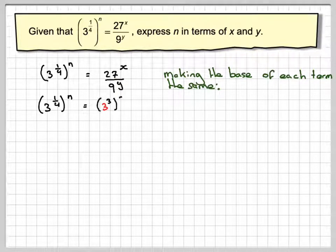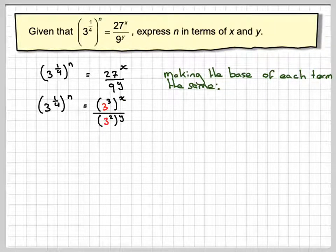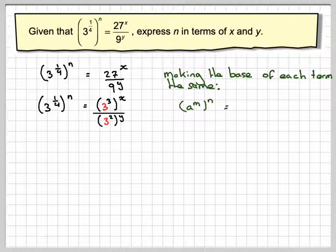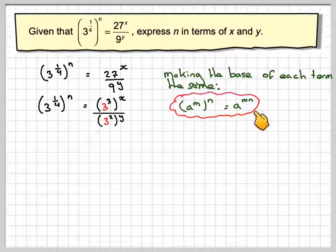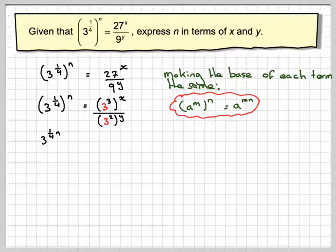27 is 3 cubed. So we'll write that 3 cubed in brackets to the power of x. And 9 is 3 squared to the power of y. So that's going to give that a to the m to the n, using this for this one here. a to the m to the n is the same as a to the mn. So we just need to multiply those powers. So that'll be 3 to the quarter n.